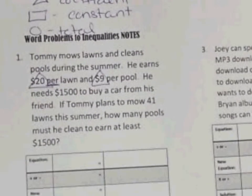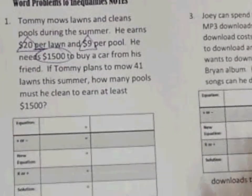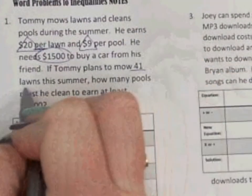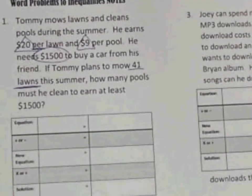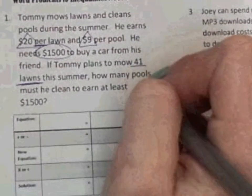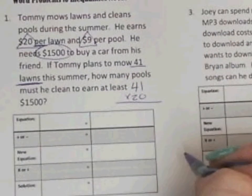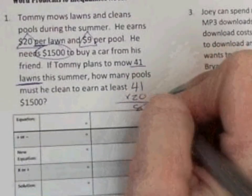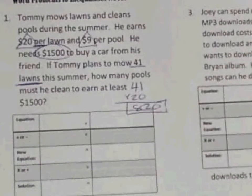He needs $1,500, so that's going to be my total. Down here it tells us that he mows 41 lawns, so we have to do some side work to figure out how much he's actually receiving whenever he does that. We're going to do side work of 41 times 20, and when we do that, we get a total of $820. We know that no matter what, he is going to earn $820. That is important because that is going to become our constant.